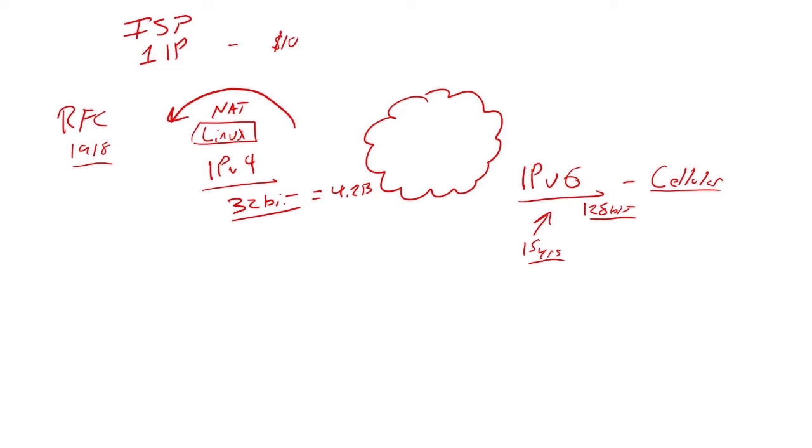We burnt a lot of these using kind of these funny reserves. We burnt a lot of them using private addressing, which actually allowed us to stretch a lot further than we would have originally got. But we said 4.2 wasn't enough. Well, if we moved to a 33-bit addressing system, as funny as that sounds, it would have been 8.4 billion addresses. And that carries on. If we went to 34 bits, it would have been 16.8 billion addresses.